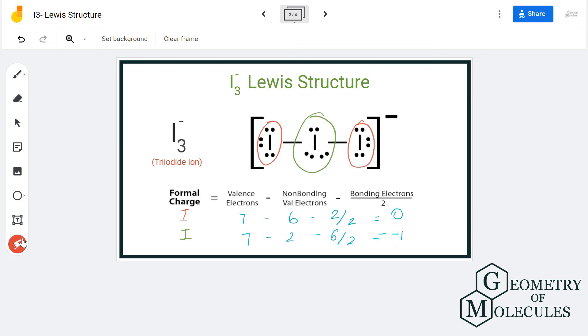You can see that there is a negative sign on the triiodide ion, and that is because it has a minus one charge on the central atom. So this is the Lewis structure for triiodide ion.